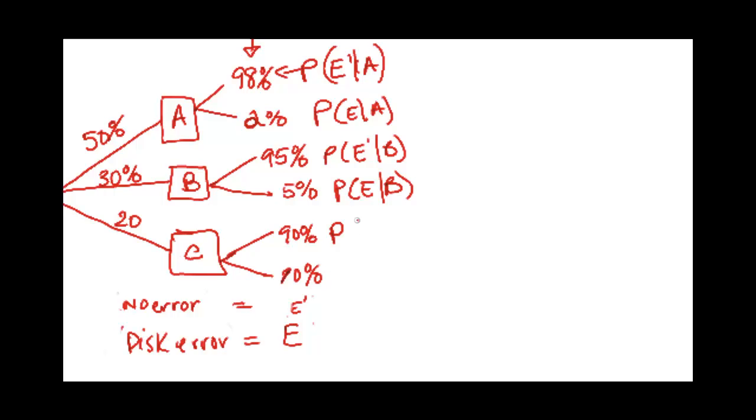And then this is the probability of no error from C. This is the probability of from C.